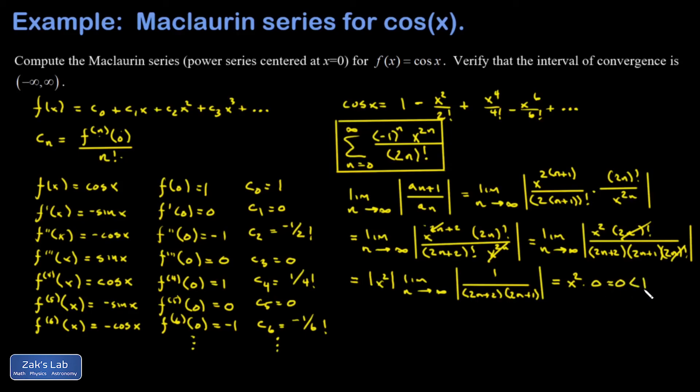And this is always less than one, no matter what x is. So our ratio test doesn't put any restrictions on x whatsoever. No matter what x is, I pass the ratio test for convergence, and that means our interval of convergence is negative infinity to infinity. In other words, this series converges for all real values of x. So that's pretty cool: we can represent the cosine function now as an infinite series expansion, and it works no matter what x is.